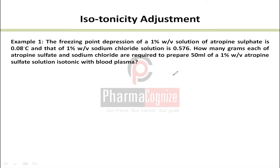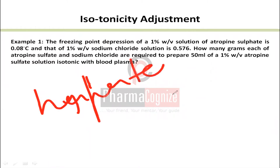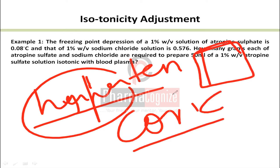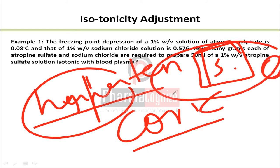If we don't give an iso-osmotic solution, problems arise. If we give a hypertonic solution — hypertonic means higher concentration of solute, so water content is lower — then when administered into the blood, the RBCs will lose water to equalize the osmolarity, and as a result, the RBCs will shrink.